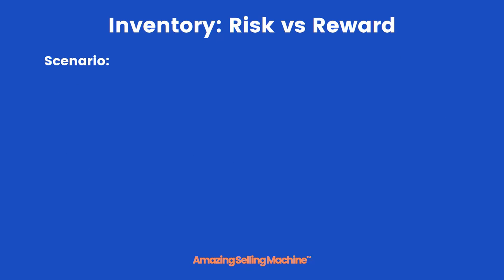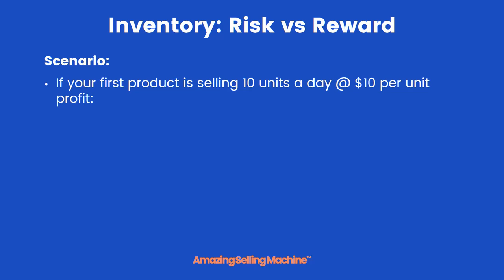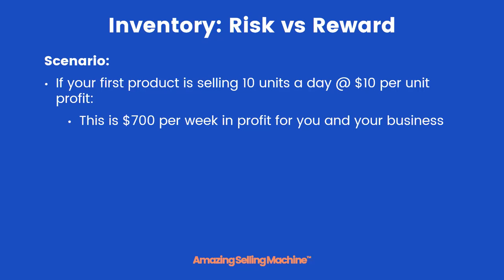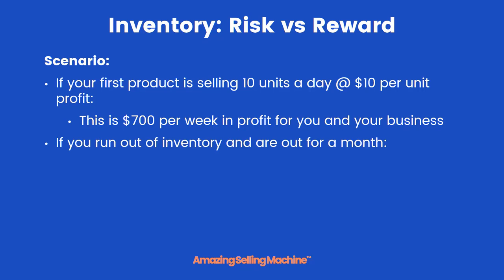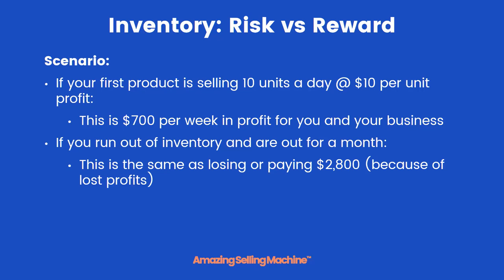Let's look at another kind of risk. Imagine your first product is selling 10 units a day at $10 per unit profit — that's $700 per week in profit. If you run out of inventory and you're out of it for one month, that's the same as losing $2,800 in lost profits. Running out of inventory is also a risk that you want to try and avoid.